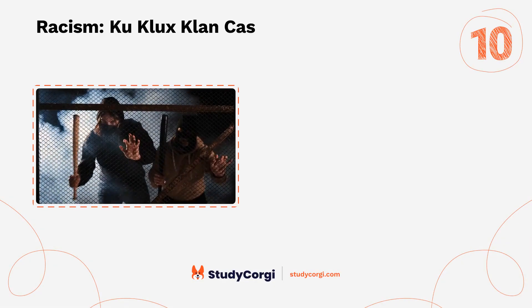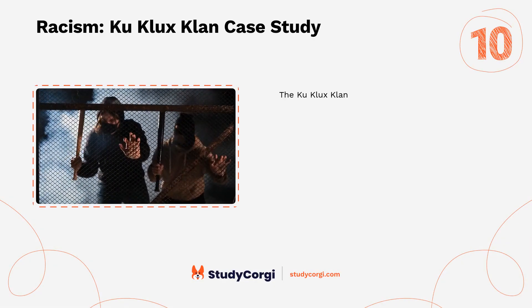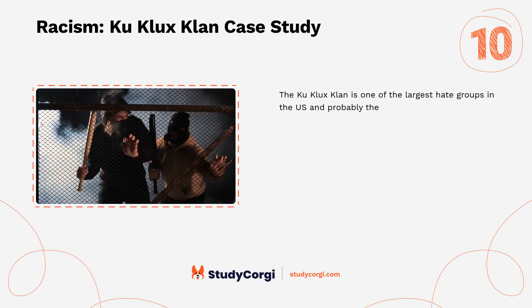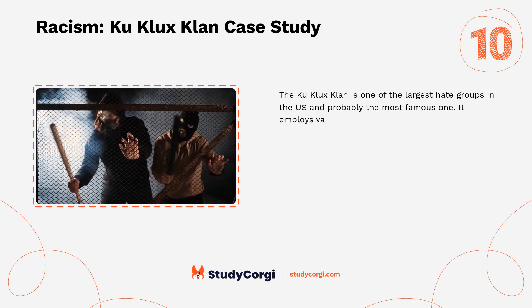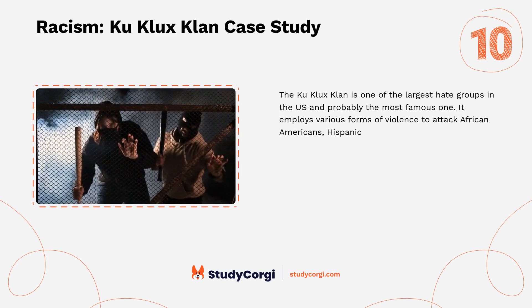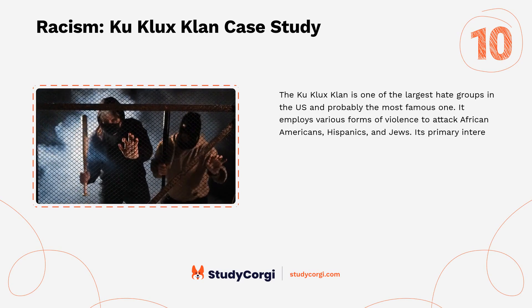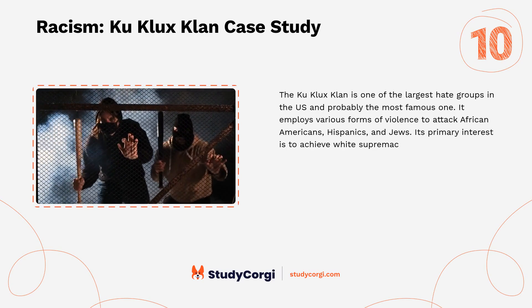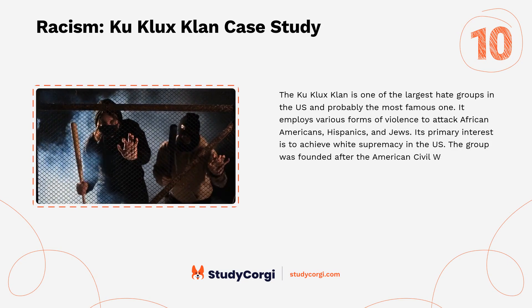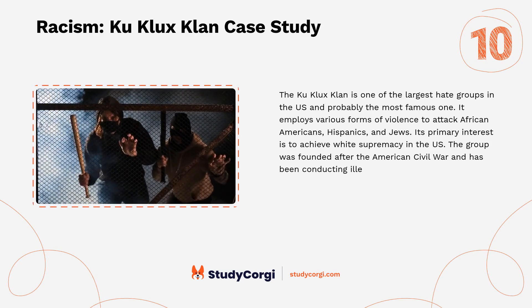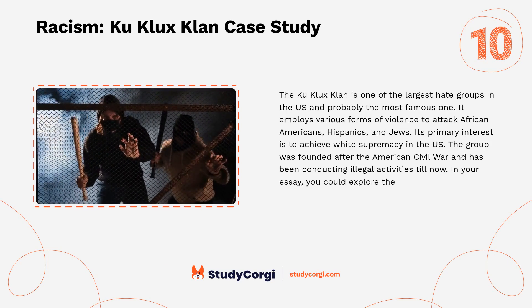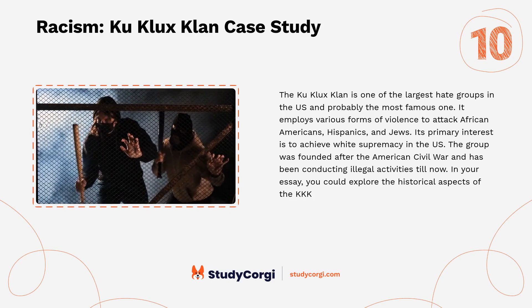Racism: Ku Klux Klan Case Study. The Ku Klux Klan is one of the largest hate groups in the U.S. and probably the most famous one. It employs various forms of violence to attack African Americans, Hispanics, and Jews. Its primary interest is to achieve white supremacy in the U.S. The group was founded after the American Civil War and has been conducting illegal activities till now. In your essay, you could explore the historical aspects of the KKK or its current state.